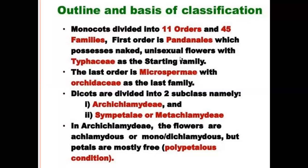Monocotyledonae shows parallel venation of leaves, trimerous flowers, and adventitious or fibrous root system. The Monocots are divided into 11 orders and 45 families. The first order is Pondweeds, which possesses naked and unisexual flowers, with Typhaceae as the starting family. The last order of Monocots is Microspermae.